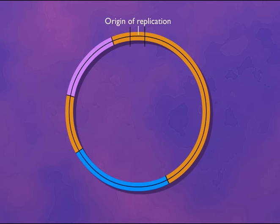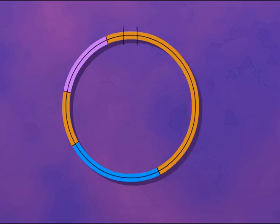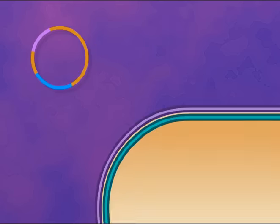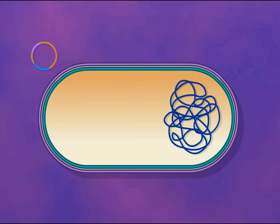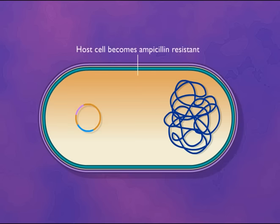Most plasmids used as vectors also encode some type of selectable marker, such as the gene for resistance to ampicillin. If the host cells are ampicillin sensitive, the only host cells that can grow on a medium containing ampicillin are those that have taken up the plasmid.